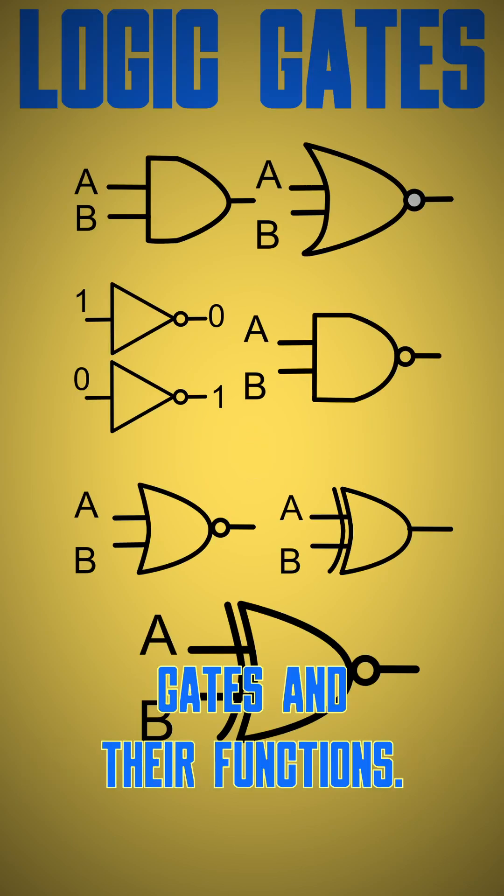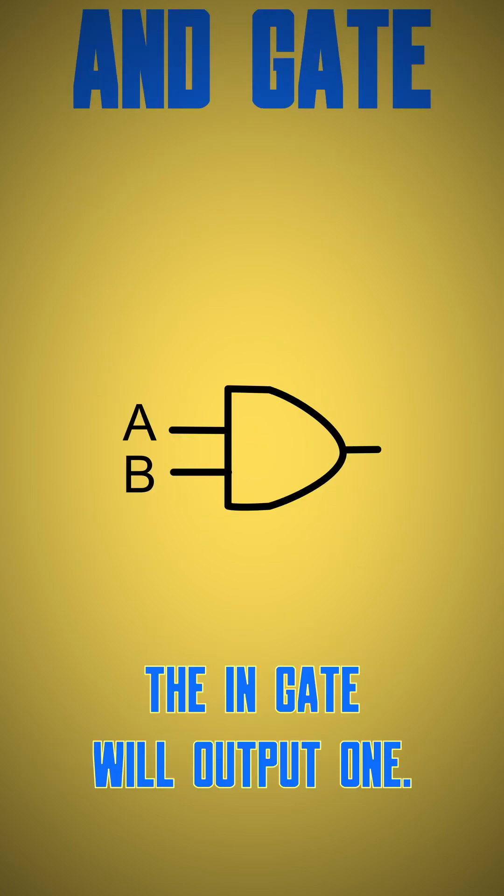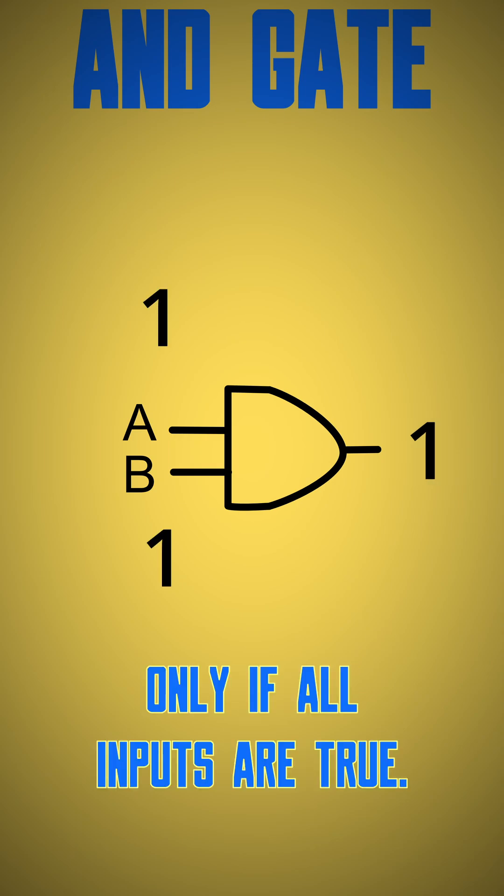Here are the primary types of logic gates and their functions. AND gate: the AND gate will output one only if all inputs are true.